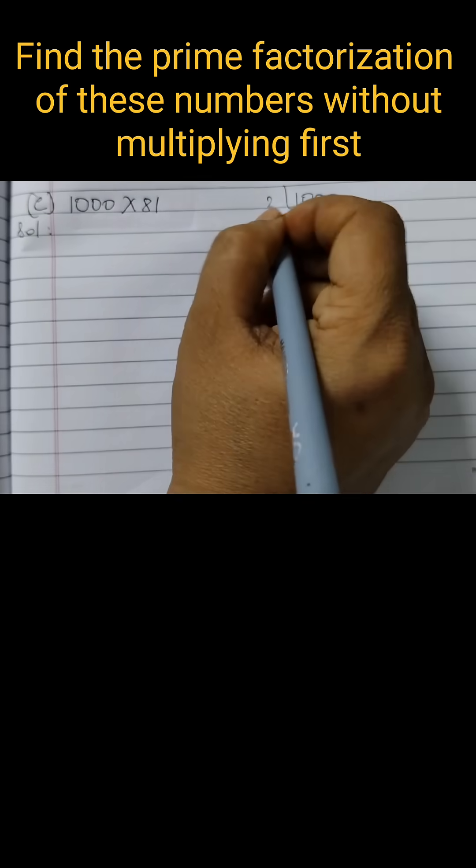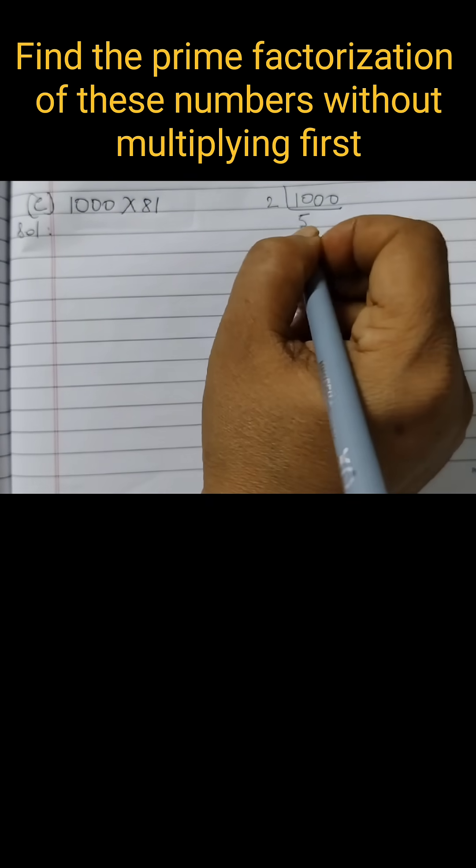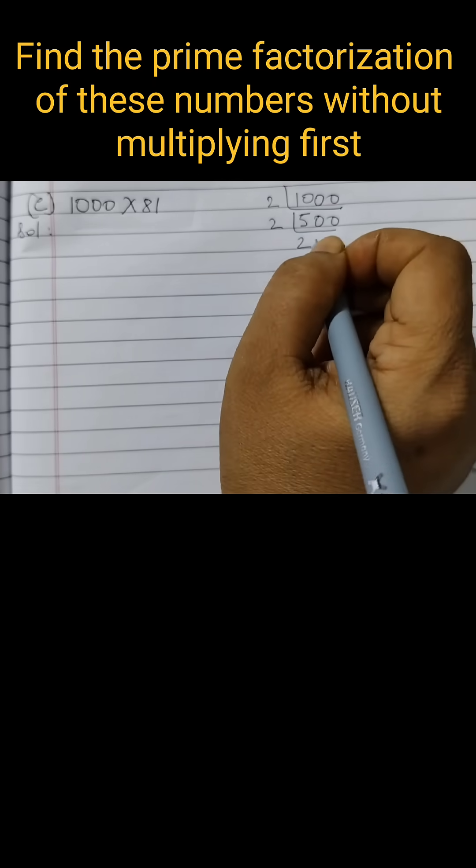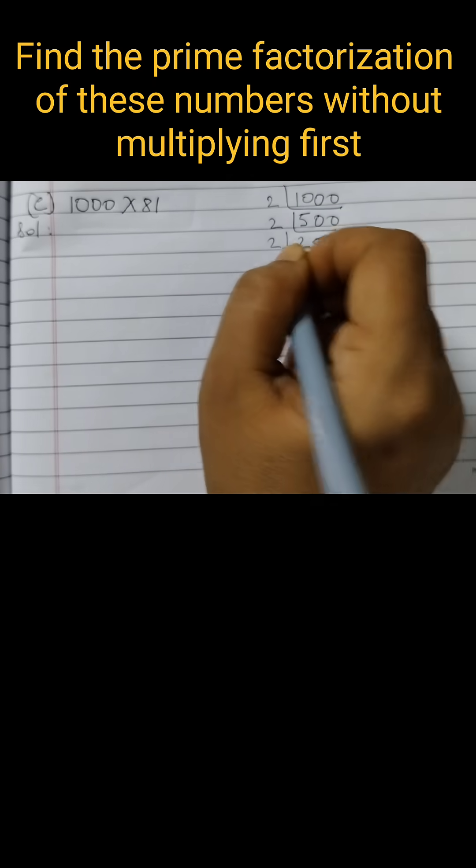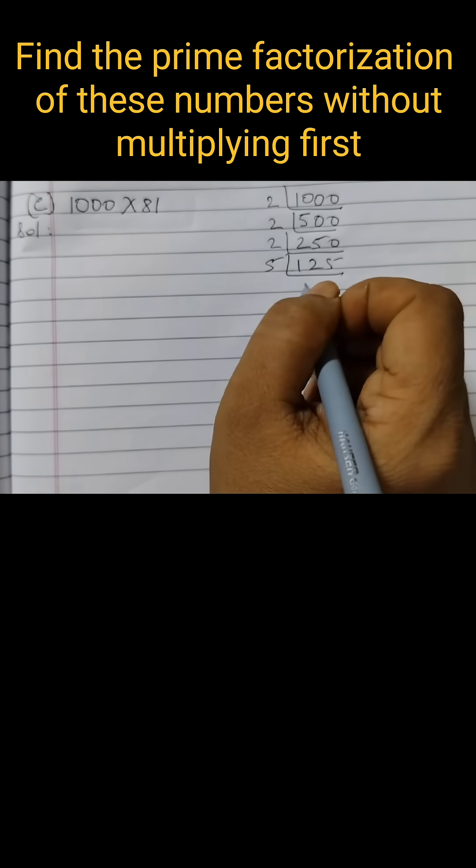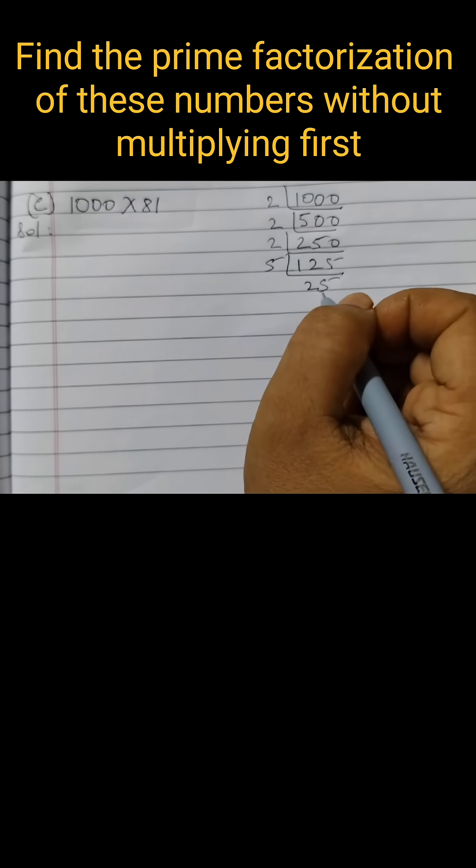So 1000 prime factors start with 2. 2, 500. 2, 250. 2, 125. Then 5, 25. 5, 5. 5, 1.